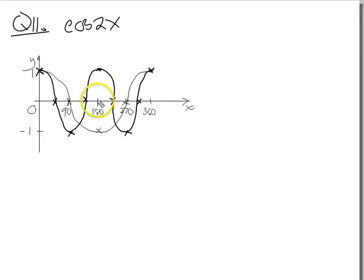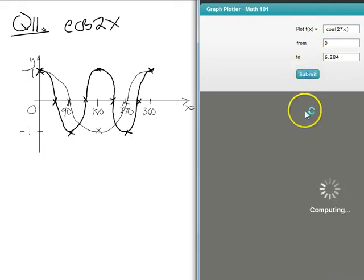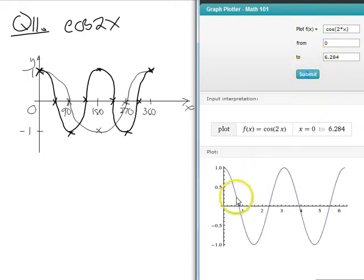There we are. That's the sketch, so let's just check it on the plotter. So I've typed it in here, cos 2x, 0 to 2 pi. Let's do the sketch.